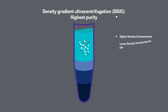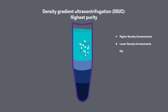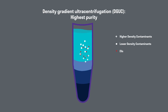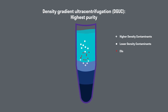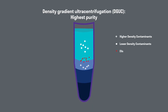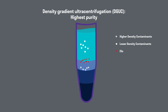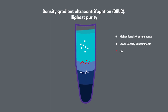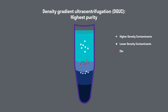Finally, density gradient ultracentrifugation, or DGUC, is a high-resolution purification technique. It uses multiple concentrations of a high-density medium to establish a density gradient. Preparing such a gradient may be slightly more time-consuming than the other separation methods, but DGUC offers the best purification of a heterogeneous mixture.